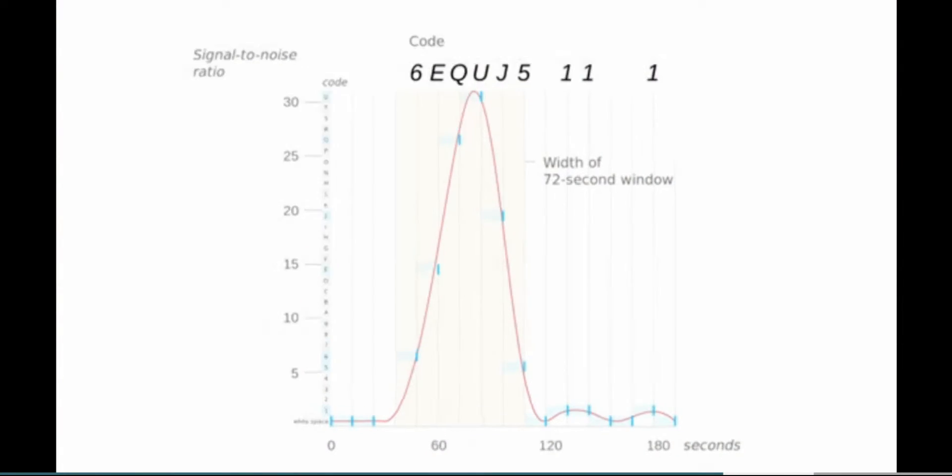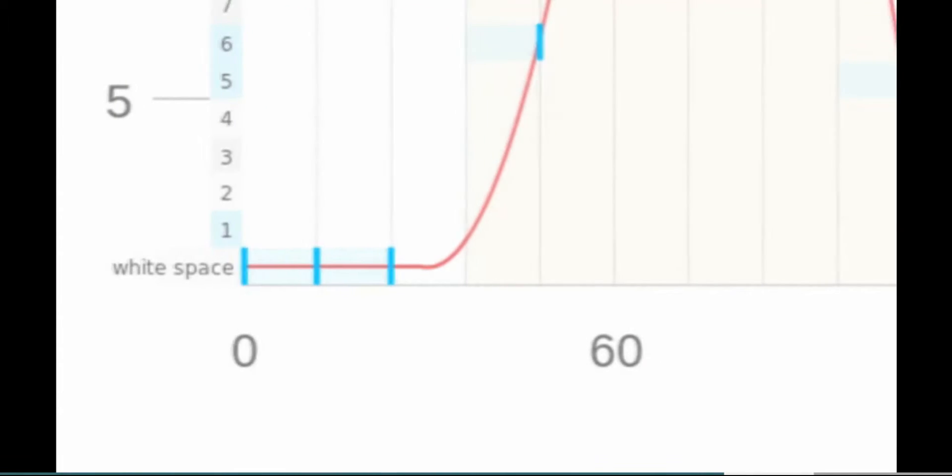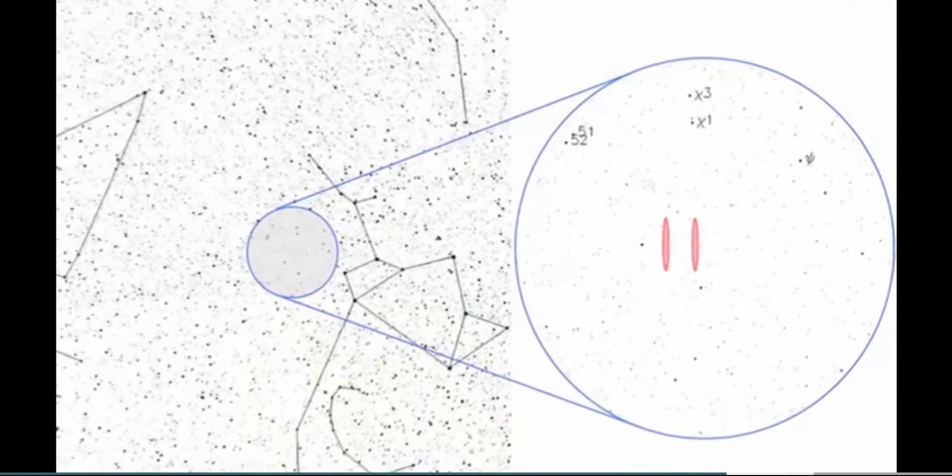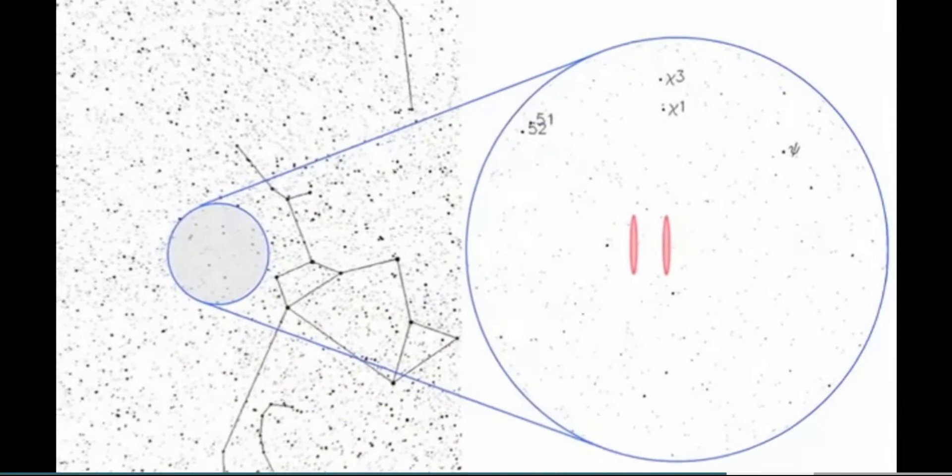The signal of unknown origin had a duration of 72 seconds and reached an intensity 30 times higher than conventional signals and had come from the constellation of Sagittarius. In fact, it was so astounding that when the technician was looking at the printout the next morning, he wrote WOW in the margin. And that's become known as the WOW signal.